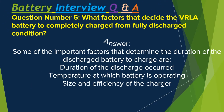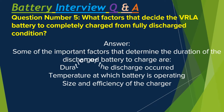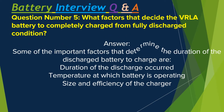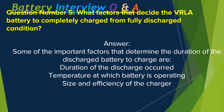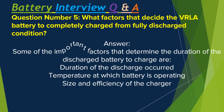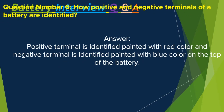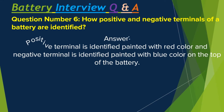Question number five: What factors decide the time for a VRLA battery to completely charge from a fully discharged condition? Some important factors that determine the duration are: number one, the duration of the discharge that occurred; number two, the temperature at which the battery is operating; number three, the size and efficiency of the charger.